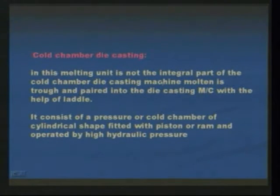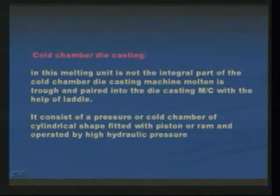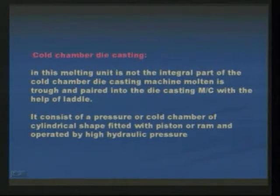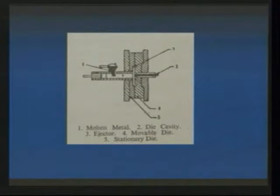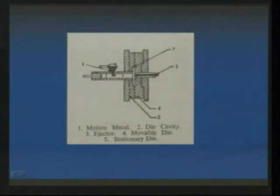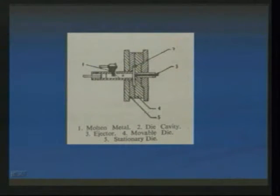The next one is cold chamber die casting. In this type, the melting unit is not an integral part of the machine. Molten metal is poured into the die casting machine with the help of a ladle. It consists of a pressure or cold chamber of cylindrical shape fitted with a piston or ram. Initially, molten metal is poured into the space, the piston moves and projects the molten metal into the die cavity, and the finished product is obtained from the ejector.